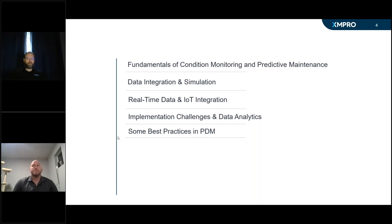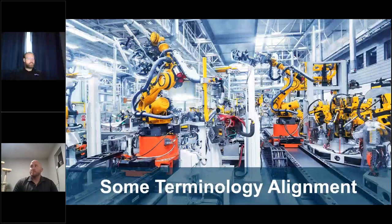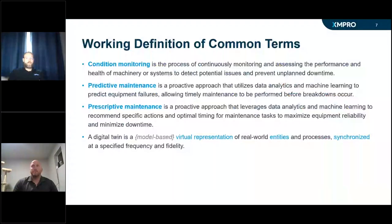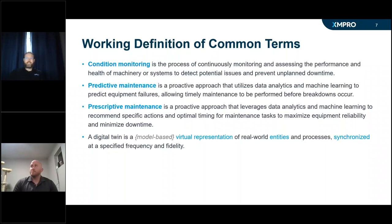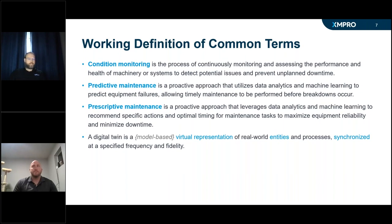Before we go into these topic areas, it's always good to make sure we have alignment on terminology. Condition monitoring refers to the process of continuously monitoring and assessing the performance and health of machinery to detect issues and prevent unplanned downtime. Predictive maintenance is a proactive approach using data analytics and machine learning to predict equipment failures so we can perform timely maintenance. Prescriptive maintenance similarly uses data analytics and machine learning, but it recommends specific actions and optimal timing for maintenance tasks to maximize reliability and minimize downtime.